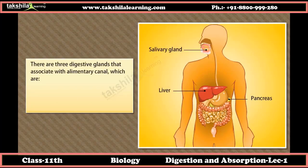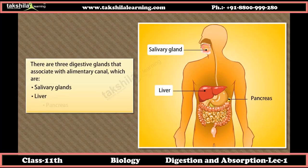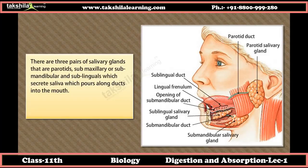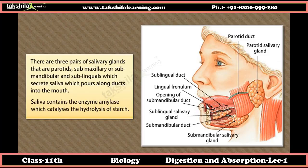Three digestive glands are associated with the alimentary canal: salivary glands, liver, and pancreas. There are three pairs of salivary glands — parotids, submaxillary or submandibular, and sublinguals — which secrete saliva that pours through ducts into the mouth. Saliva contains the enzyme amylase, which catalyzes the hydrolysis of starch.